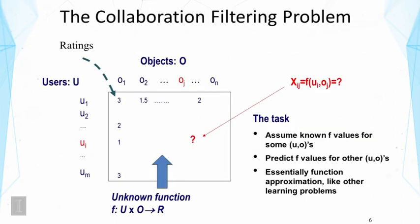Let's look at the collaborative filtering problem more formally. We consider m users — u1 through um — and n objects — o1 through on. We assume users can judge those objects by giving ratings, for example one through five for movies or products. What we see is that ratings are available only for some user-item combinations, since users obviously won't watch all movies and some users may only watch a few.